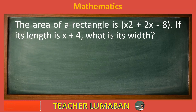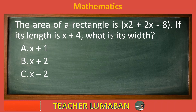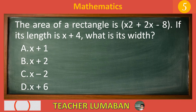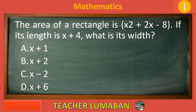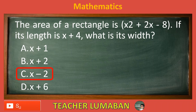The area of a rectangle is X² plus 2X minus 8. If its length is X plus 4, what is its width? Letter A: X plus 1. Letter B: X plus 2. Letter C: X minus 2. Letter D: X plus 6. The correct answer is letter C, X minus 2. The width of the rectangle is X minus 2.